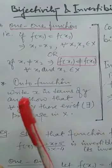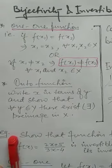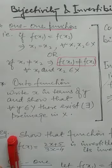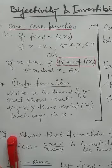Onto functions are basically those functions where, if a function is defined from set X to set Y, then for each element y in set Y, there must exist a pre-image in set X. This means there should not be any element left in set Y which does not have its pre-image in set X.